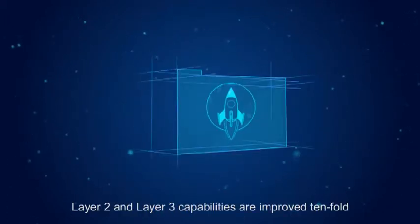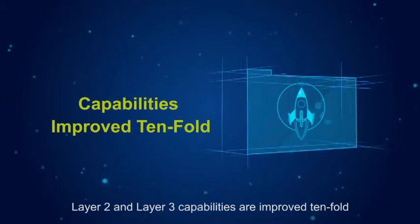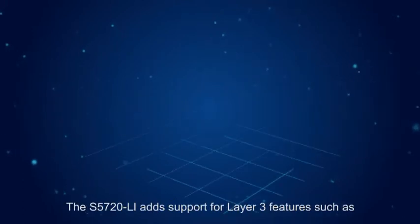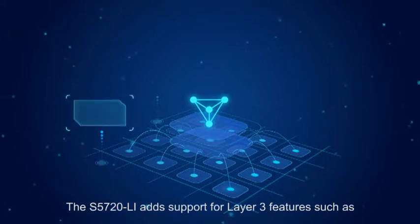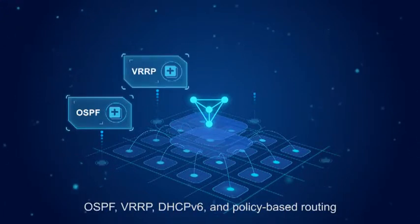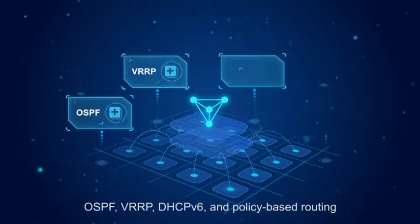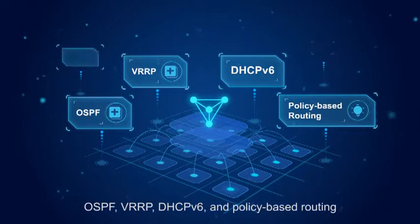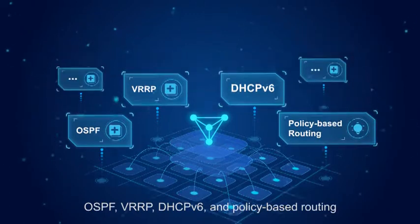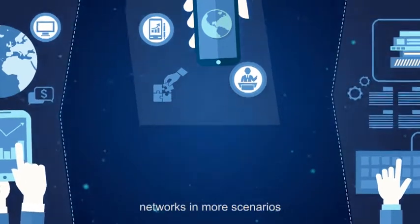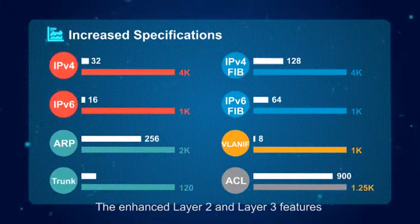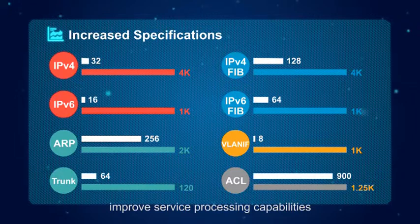Layer 2 and layer 3 capabilities are improved tenfold. The S5720 Li adds support for layer 3 features such as OSPF, VRRP, DHCP version 6, and policy-based routing, allowing access to enterprise networks in more scenarios. The enhanced layer 2 and layer 3 features improve service processing capabilities.